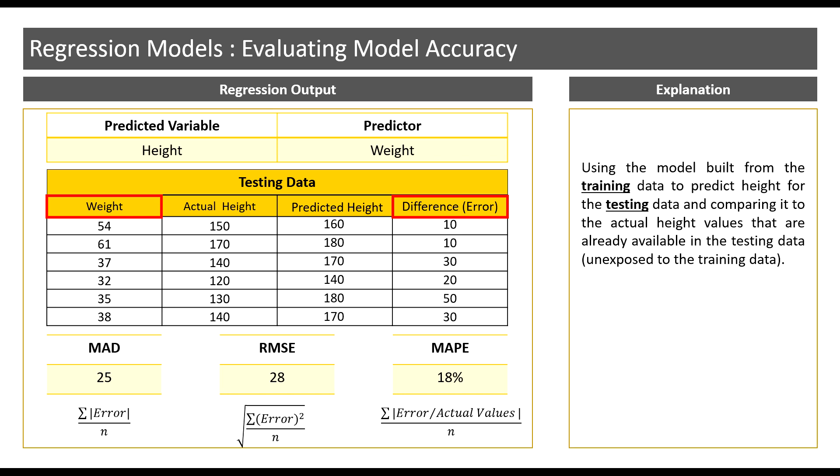That is, the predicted value could be 25 centimeters above or 25 centimeters below the actual value.